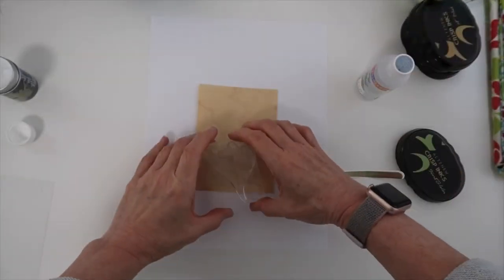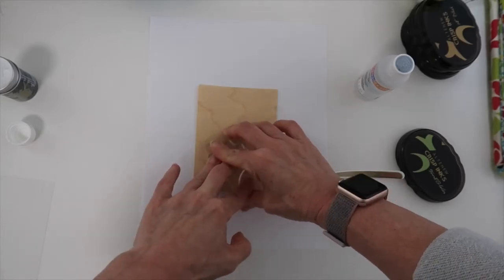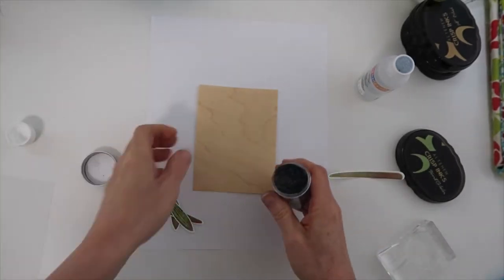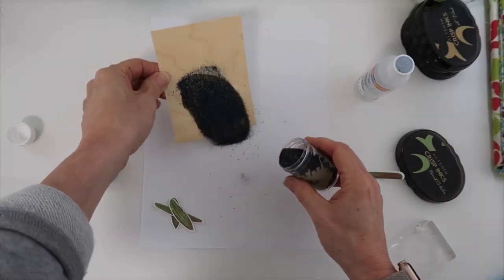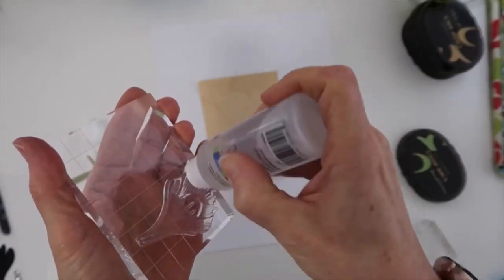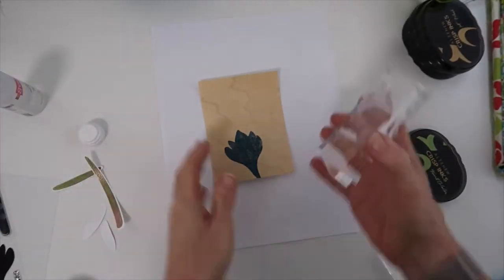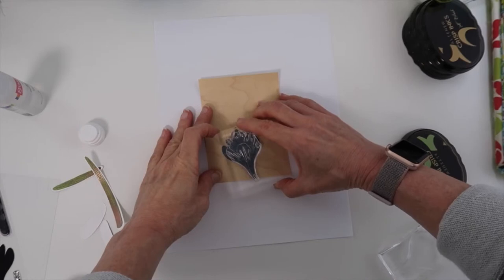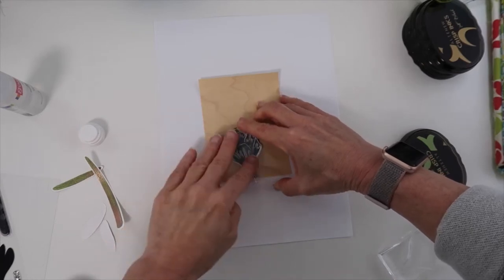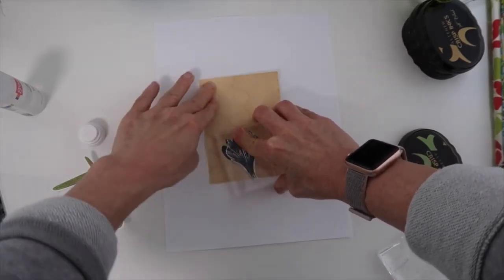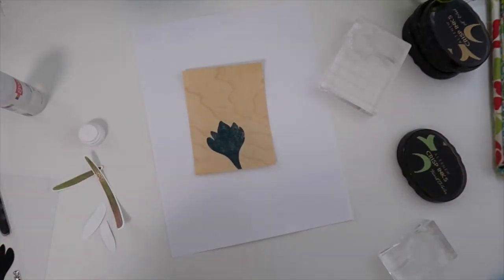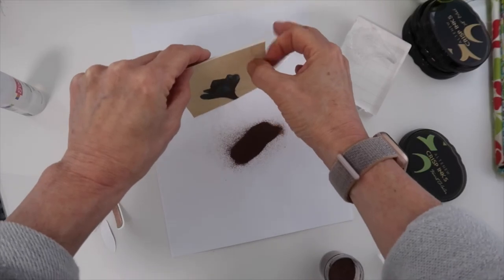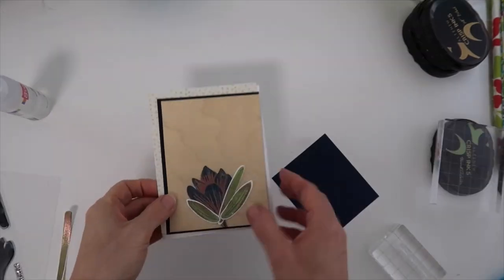Now I had another idea that I wanted to do using the Altenew birch wood cardstock, which is like a thin wood veneer piece of cardstock with the first layer of the crocus image with the more solid image. I wanted to emboss that in distress embossing. And then I'm going to stamp the final, more detailed image on top using my embossing ink. And then I'm going to emboss this in a bronze color.